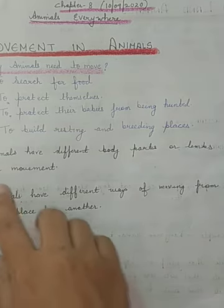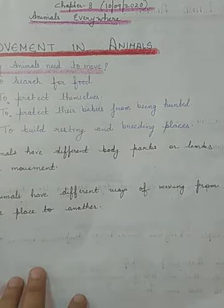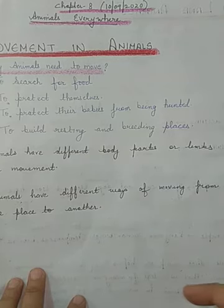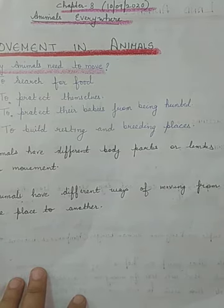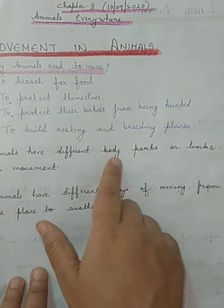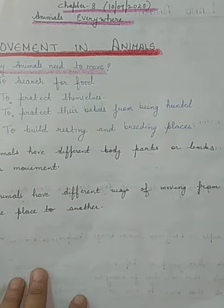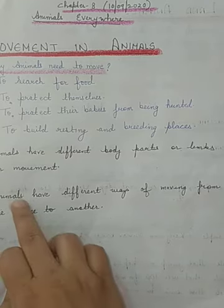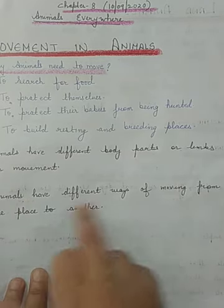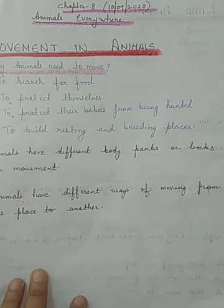All animals have different kinds of body parts which they use for moving, and they have different reasons why they move. There are different ways how they move from one place to another. Animals have different body parts or limbs for movement, and different ways of moving from one place to another.